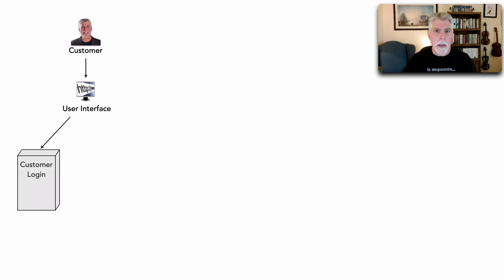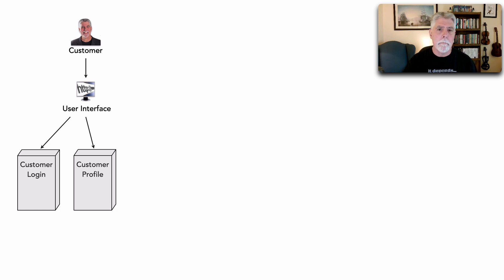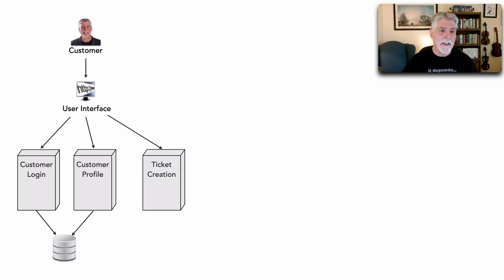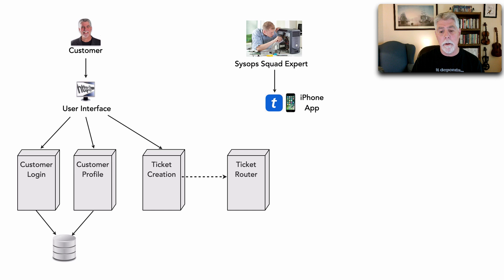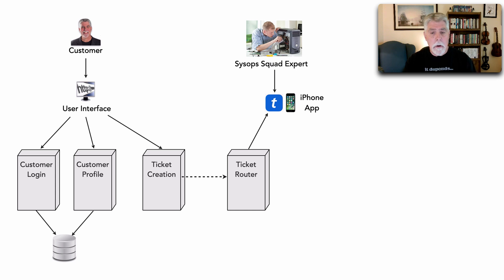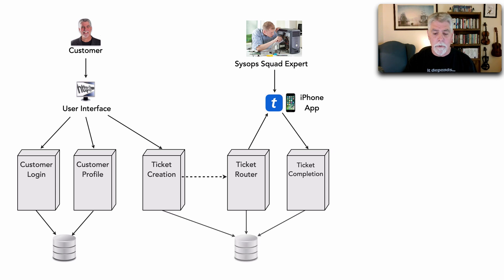Let's say we have a customer who interacts with a web-based user interface to log in, update their customer profile, support plans, and address. Both of these separately deployed services share the same database. The customer can also create tickets through this website. When a ticket gets created, it is asynchronously sent to a ticket router. That ticket router finds an expert and routes the ticket to their mobile device. The expert goes to the field, fixes the problem, and marks the ticket complete. All three of these separately deployed services share the same database.